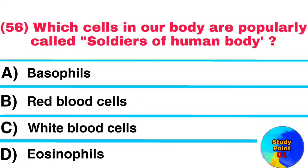Question No. 56. Which cells in our body are popularly called soldiers of the human body? Answer: White Blood Cells.